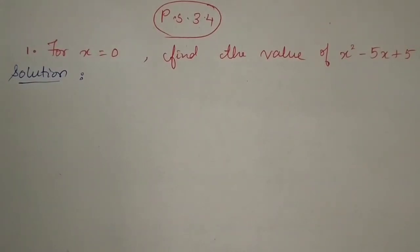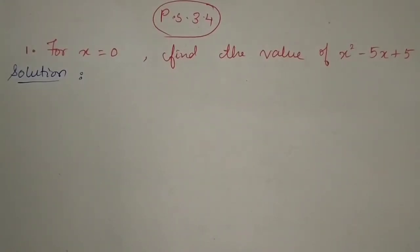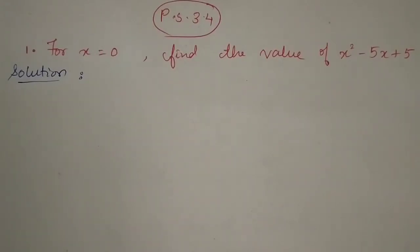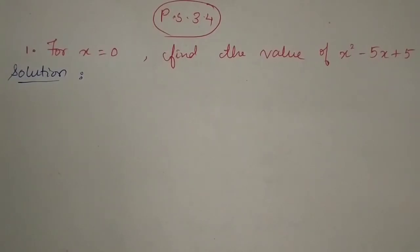Today we are going to study a new exercise based on the value of a polynomial. This is a very easy exercise. In Practice Set 3.4, the first question says: for x equal to 0, find the value of x squared minus 5x plus 5. We have to find the value of this polynomial, which is x squared minus 5x plus 5.